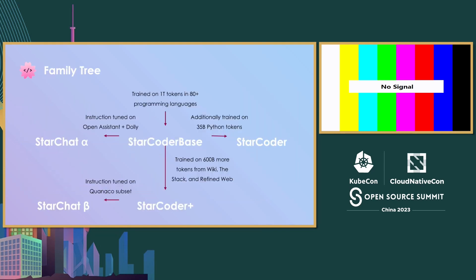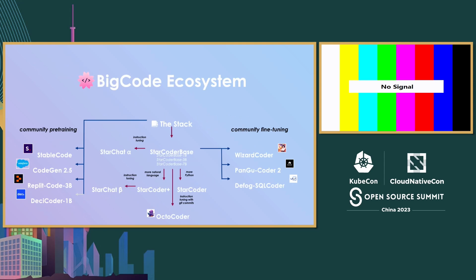This is a family tree of our models. We released StarCoder Base and StarCoder, which is StarCoder Base fine-tuned on more Python — so it does much better at Python but also on other programming languages. We also have StarCoder Plus if you want a good code model that is also good at natural language — we took StarCoder Base and fine-tuned it on natural language, mostly English, from the RefinedWeb dataset used for the Falcon model. There are also some instruction models — since the base model is not a chat assistant and you can't give it instructions, we did some instruction tuning and released StarChat Alpha and StarChat Beta, which are instruction-tuned models you can ask questions to.